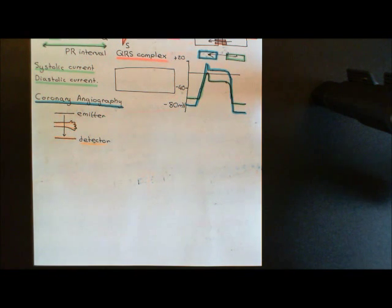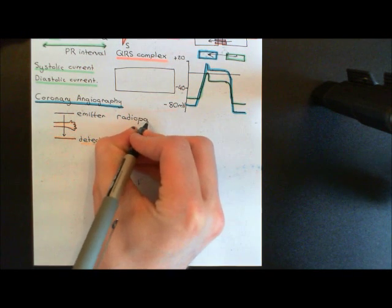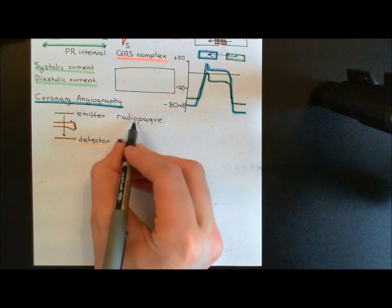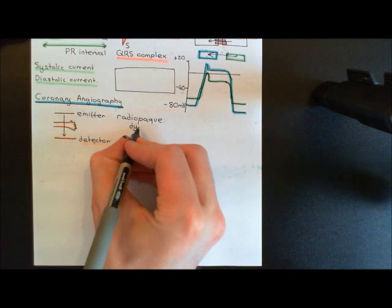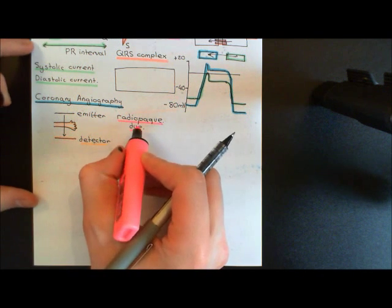We're going to take an x-ray of the heart and we would like the coronary blood vessels to show up white. In order to do that, we need to inject into the coronary blood vessels some radio-opaque dye — something which absorbs x-rays. So you inject lots of radio-opaque molecules into the blood in the coronary artery; these will absorb x-rays, and therefore when x-rays pass through the coronary blood vessels containing the dye, they'll be absorbed and the vessels will show up white on the x-ray.